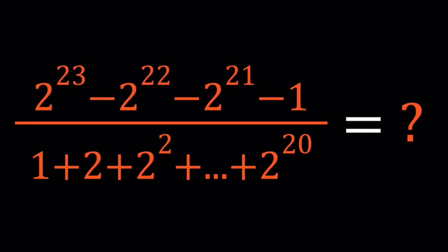Hello everyone. In this video, we're going to be simplifying a numerical expression. I guess we could call this a homemade rational expression or just an arithmetic problem with exponentials. So, we have 2 to the power of 23 minus 2 to the power of 22 minus 2 to the power of 21 minus 1. And of course, that's divided by 1 plus 2 plus 2 squared all the way up to 2 to the power of 20.